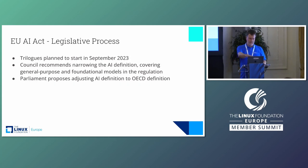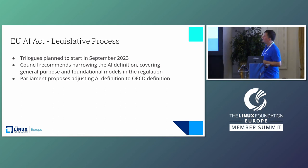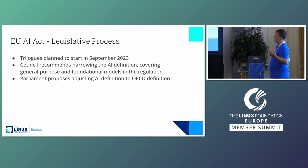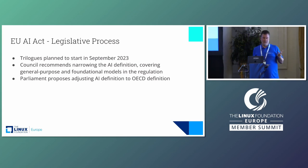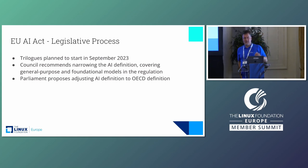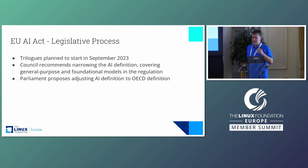Trilogues for the AI Act are also supposed to start in September. There's input from the council that would like to narrow the AI definition, but there's also a suggestion — and this worries many people in the open source community — that the act should also cover general purpose and foundational models. General purpose models are models that are generally trained on, for example, image recognition but don't yet have a specific purpose, and those are the typical playing grounds of research, development, academia, and open source. With this amendment recommended by the council, the AI Act would already cover such systems that are still experimental or in development.